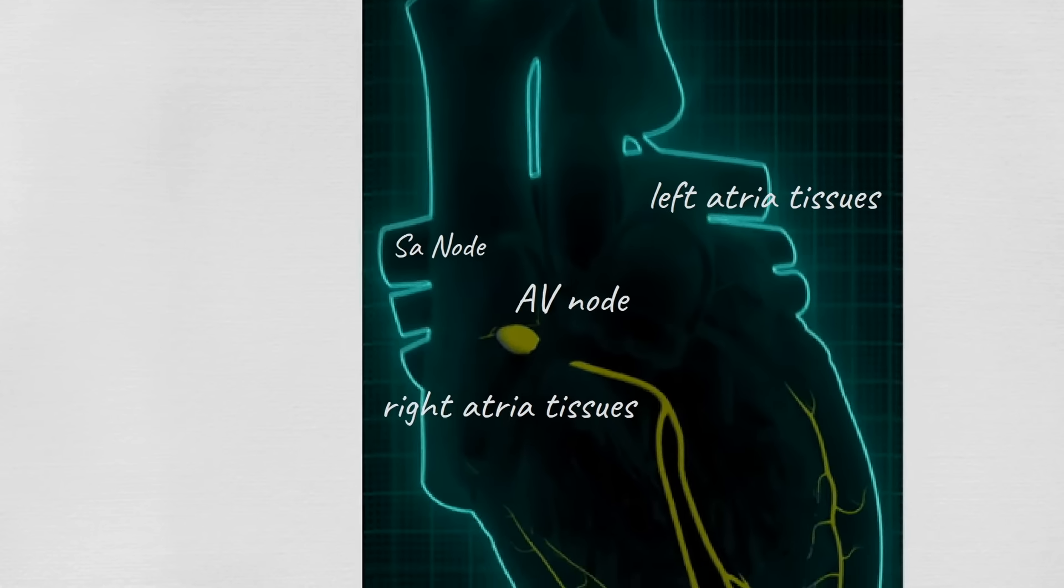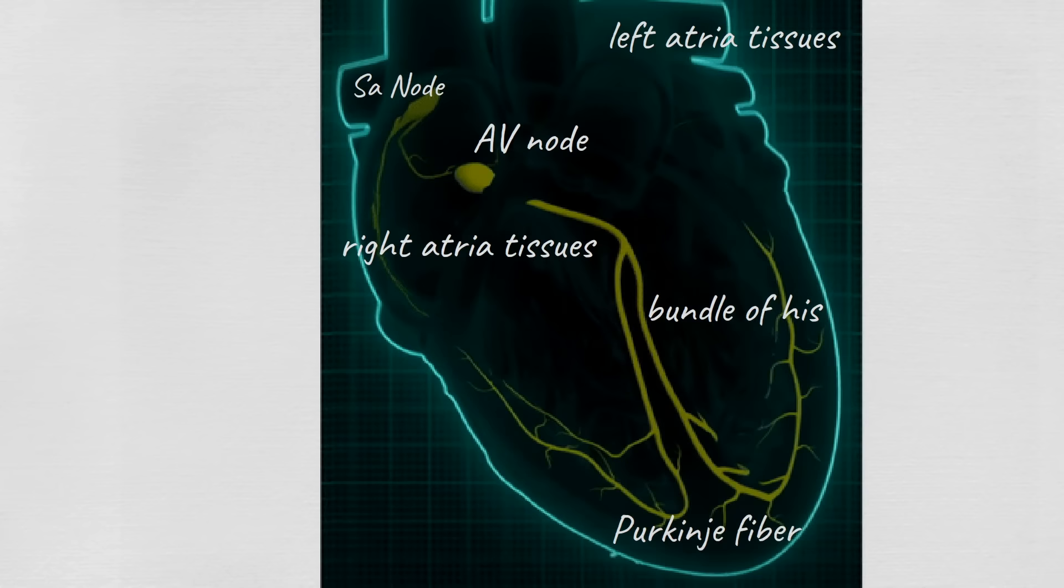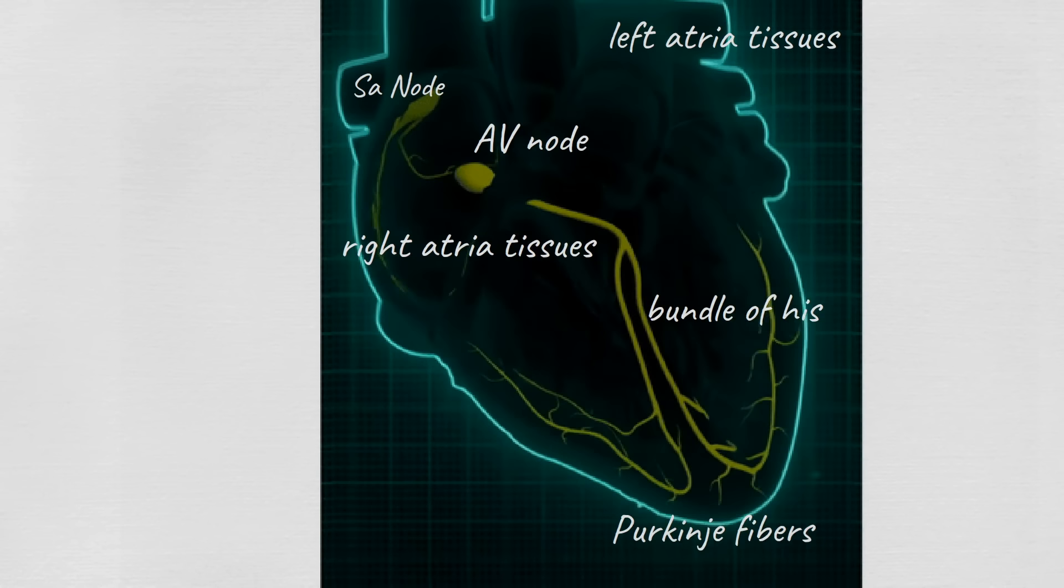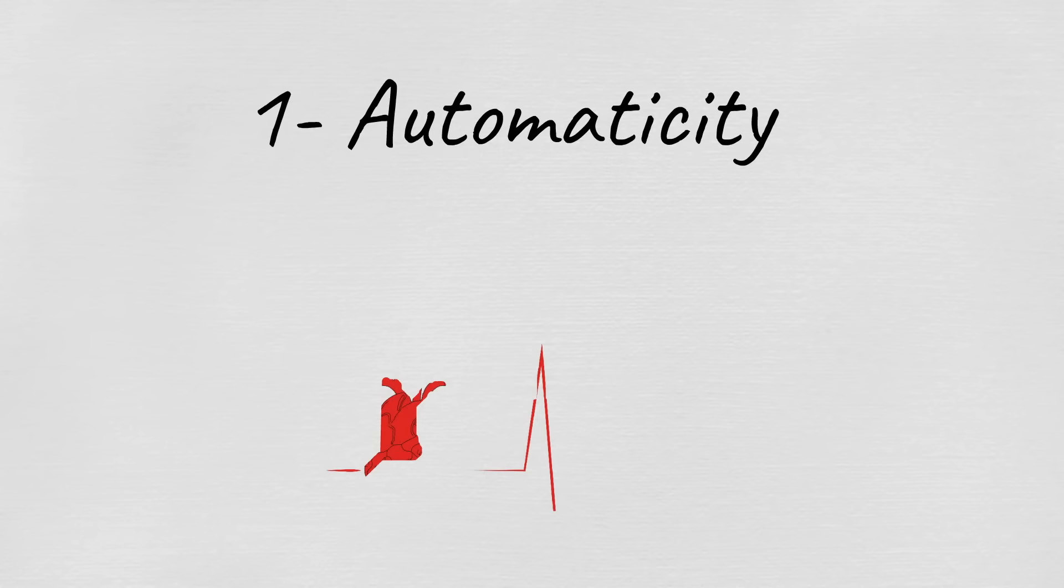Then the signal will reach the AV node and slowly pass through the bundle of His and finally into the Purkinje fibers, causing the ventricle to contract. SA nodes are special myocytes that own the property of pacemaker.